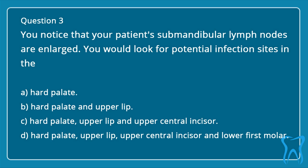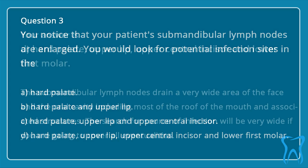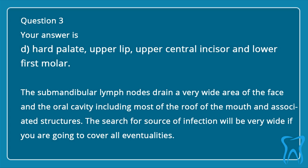Question 3. You notice that your patient's submandibular lymph nodes are enlarged. You would look for potential infection sites. The correct answer is D: hard palate, upper lip, upper central incisor, and lower first molar. The submandibular lymph nodes drain a very wide area of the face and oral cavity, including most of the roof of the mouth and associated structures. The search for a source of infection will be very wide to cover all eventualities.